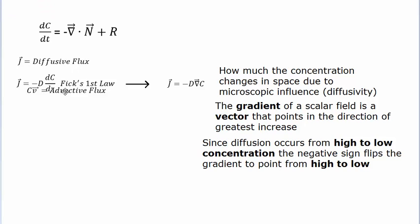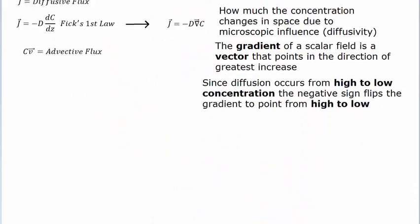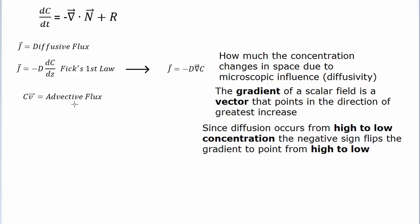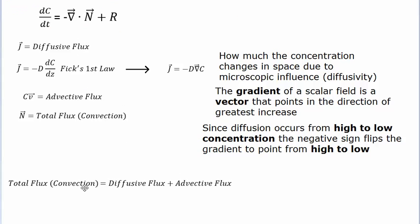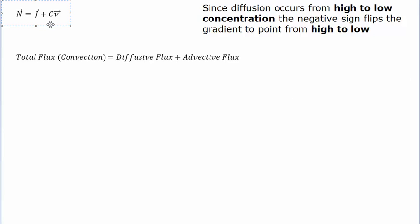The other term is advective flux — the movement of molecules associated with bulk motion, like the currents we discussed. Diffusive flux is associated with randomness and random walks, controlled by the diffusivity constant. Advective flux depends on the bulk movement of molecules. What we call N in the Diffusion-Convection Equation is total flux — the combination of diffusive flux and advective flux, which we earlier called convection.